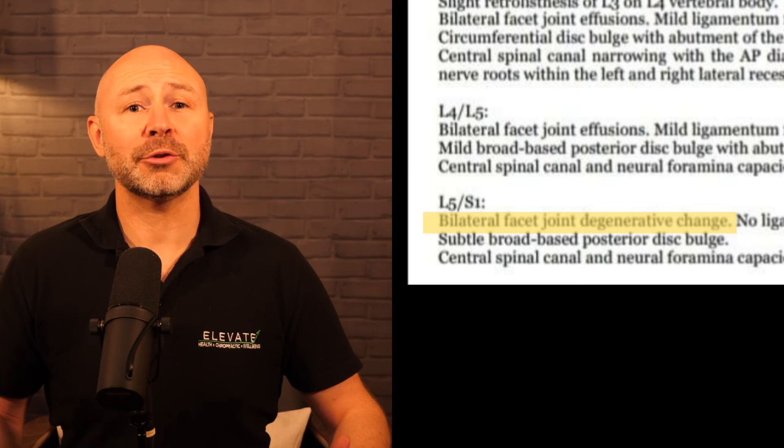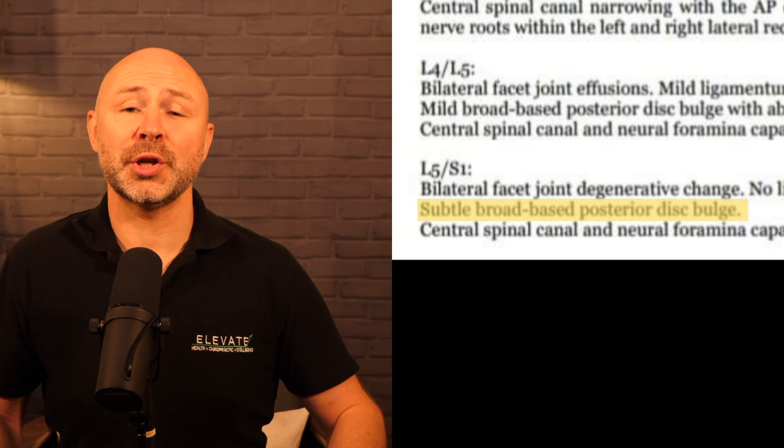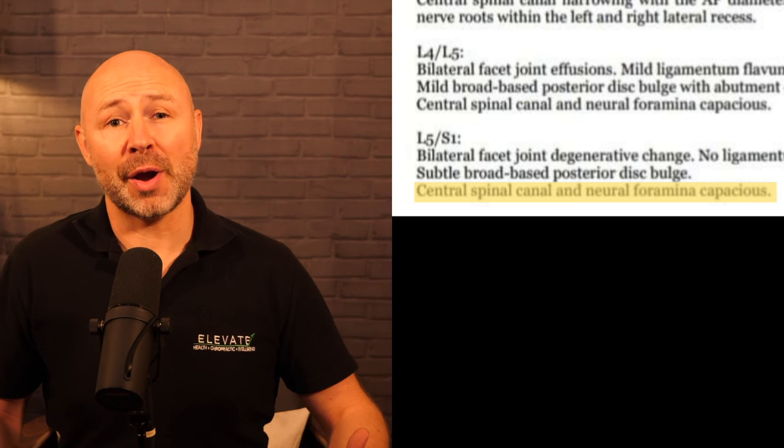At L5-S1 we have bilateral facet joint degenerative change — no surprises there, as degenerative changes quite often happen in these weight-bearing joints even in asymptomatic people. However, we must respect that the clinical history includes a long history of low back pain, so this facet degeneration could be part of the person's symptoms. The ligamentum flavum at this level shows no sign of thickening, and there's a very subtle broad-based posterior disc bulge — most likely incidental, but we must check history and examination to be sure. There was no sign of narrowing in the spinal canal or neuroforamina.